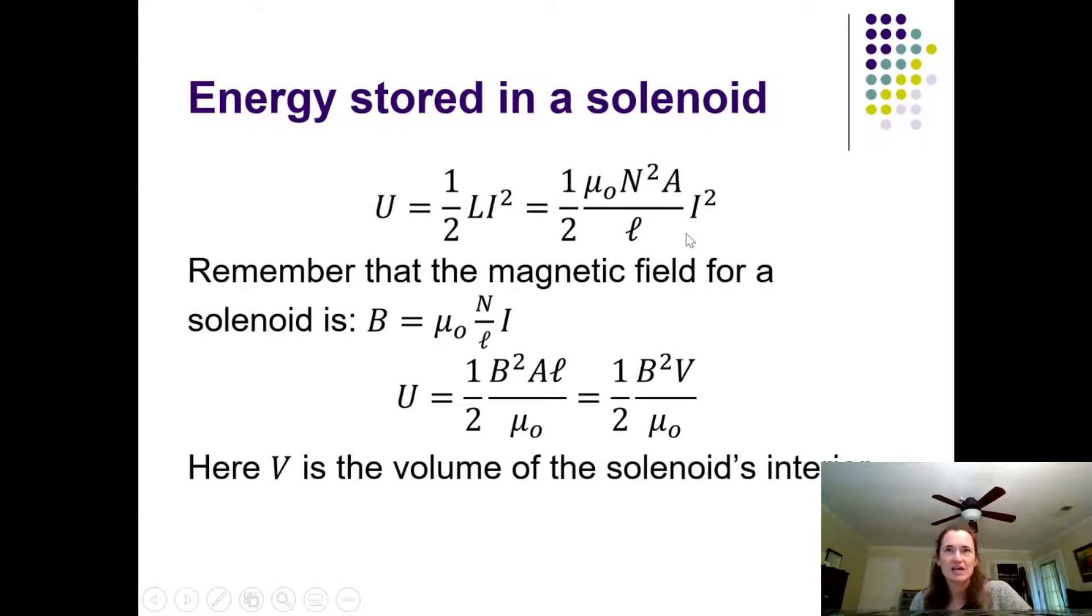Taking that over to the new slide here, one-half mu naught N squared A over L times I squared. Let's remember that the magnetic field for a solenoid, in the interior of an ideal solenoid, B is equal to mu naught times N over L times I. Remember, sometimes we write this as mu naught times little n times I, but little n is just the number of turns per unit length, which is big N over L.